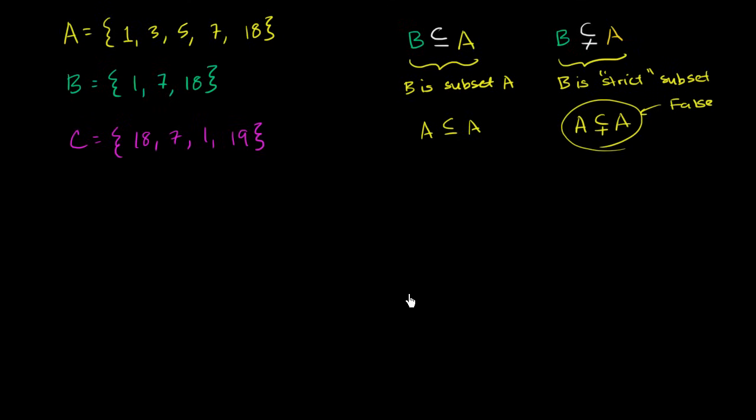So let's give ourselves a little bit more practice. Can we write that B is a subset of C? Well, let's see. C contains a 1, it contains a 7, it contains an 18. So every member of B is indeed a member of C. So this right over here is true.